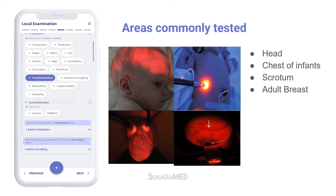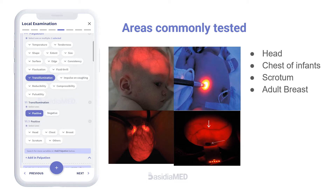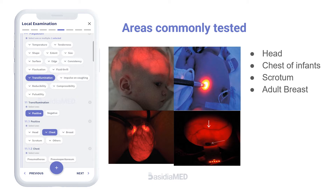Areas that are routinely tested for transillumination include head, chest of infants, scrotum, and adult female breast.